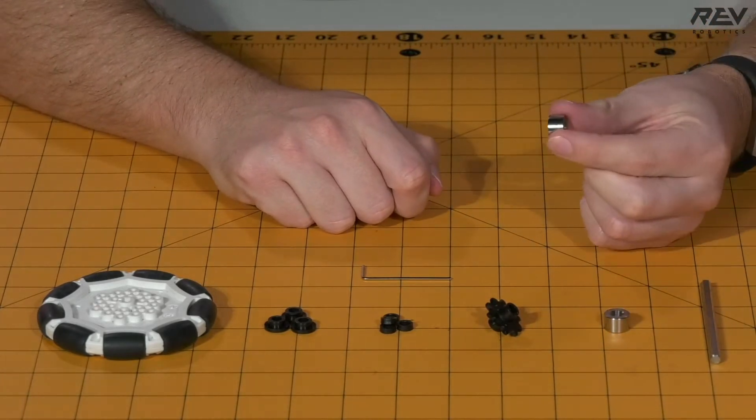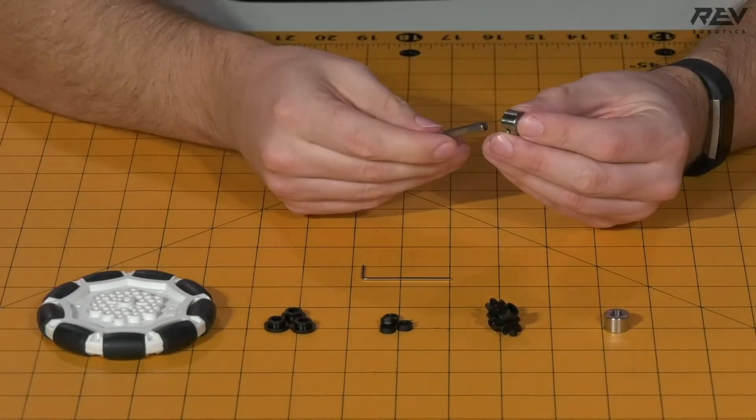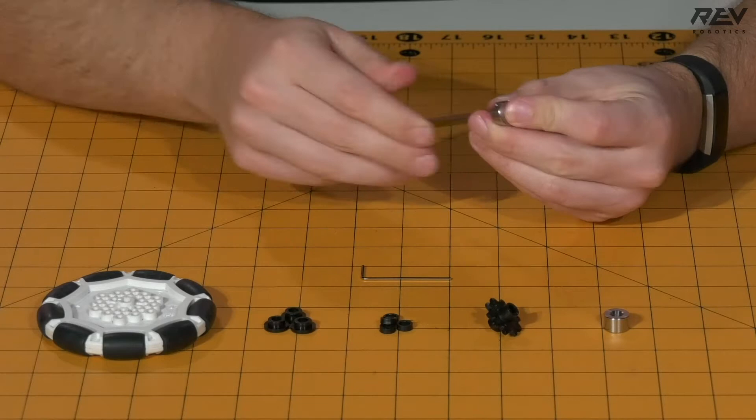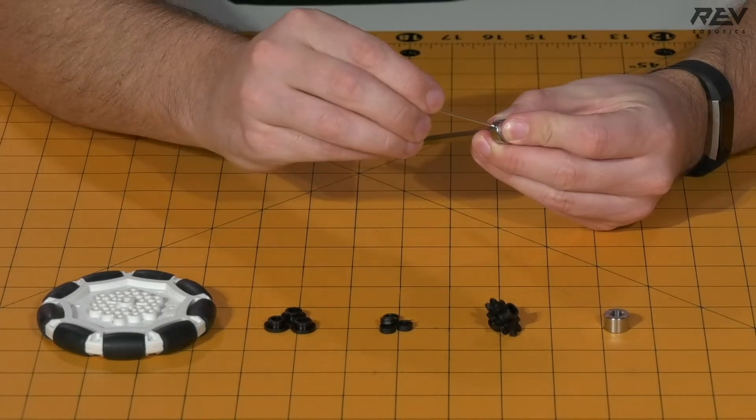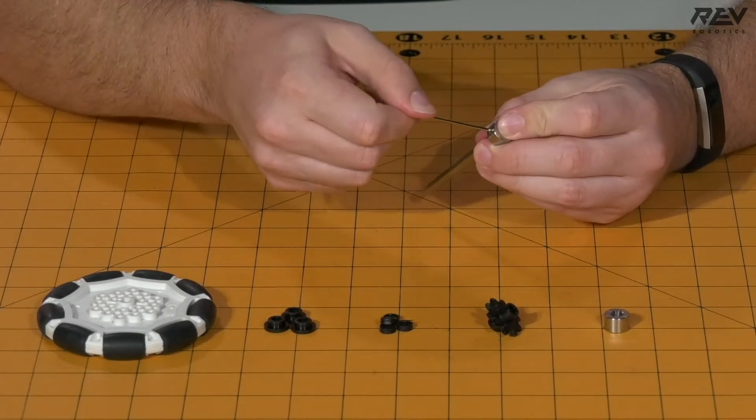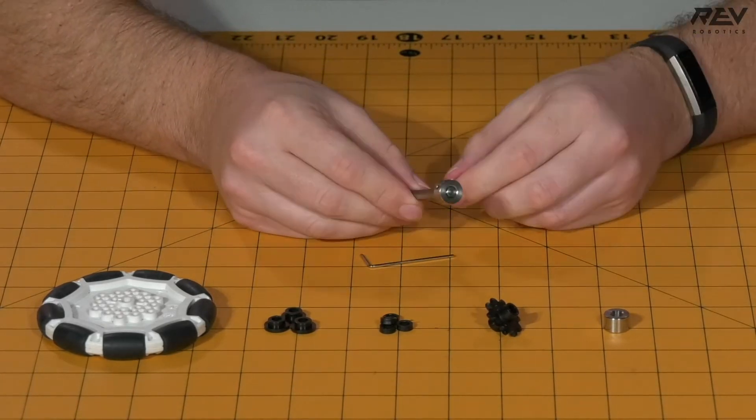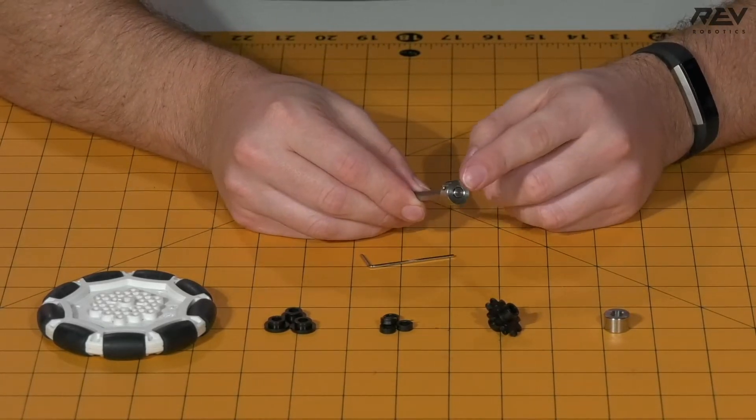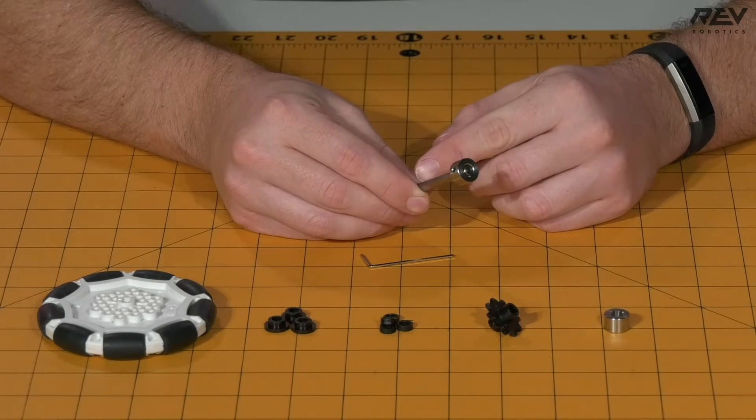To begin, take a shaft collar and your hex shaft and put the shaft collar flush against the end of the hex shaft. Tighten up that shaft collar, making sure it is completely flush with the end of the hex shaft.